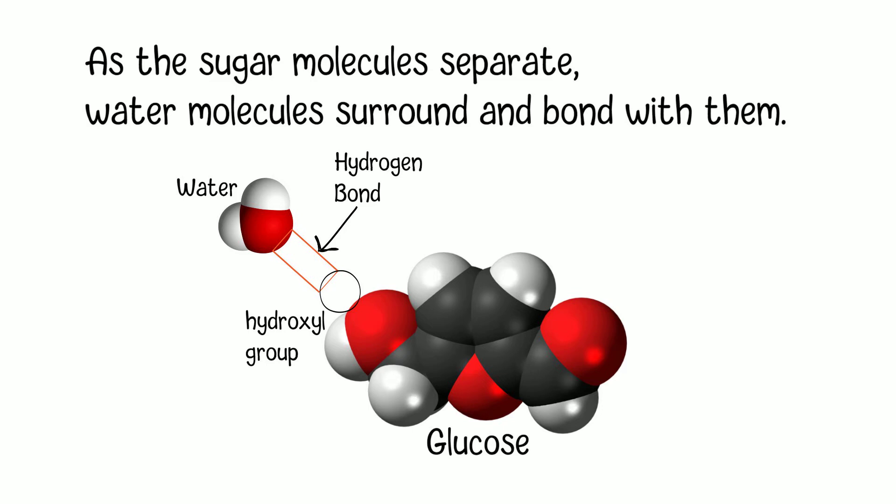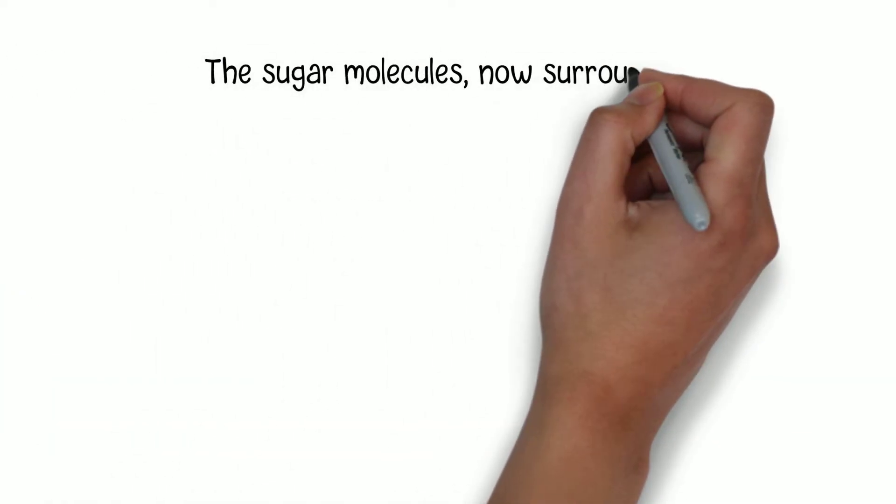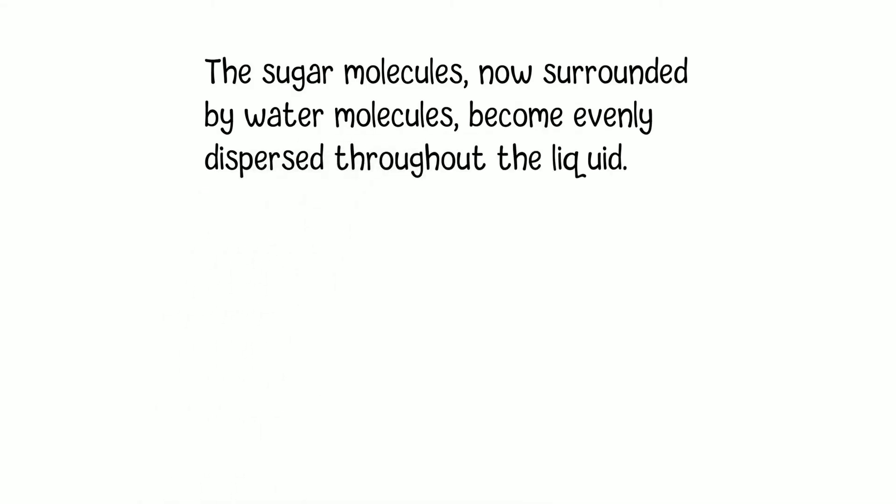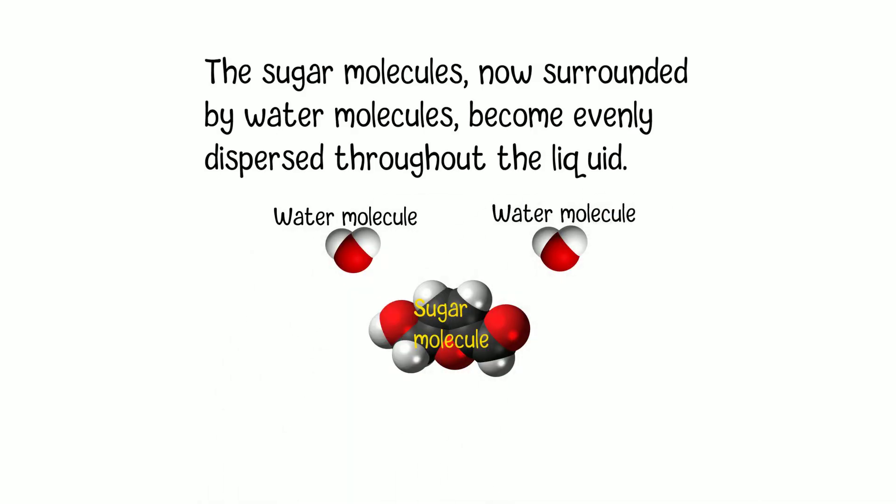The sugar molecules, now surrounded by water molecules, become evenly dispersed throughout the liquid. This results in a uniform distribution of sugar molecules in the solution. Each sugar molecule is surrounded by a layer of water molecules, preventing the sugar from re-aggregating into crystals.